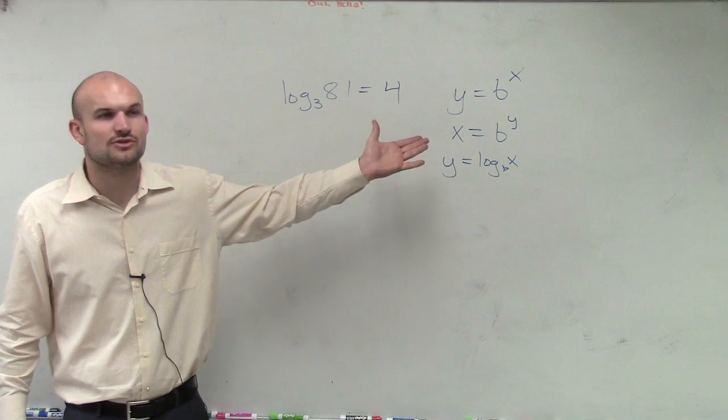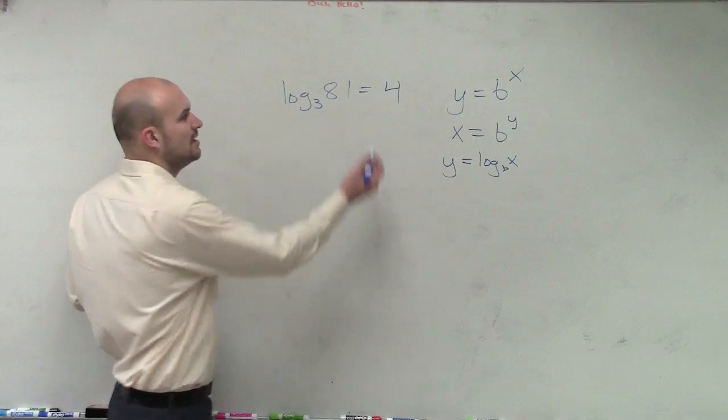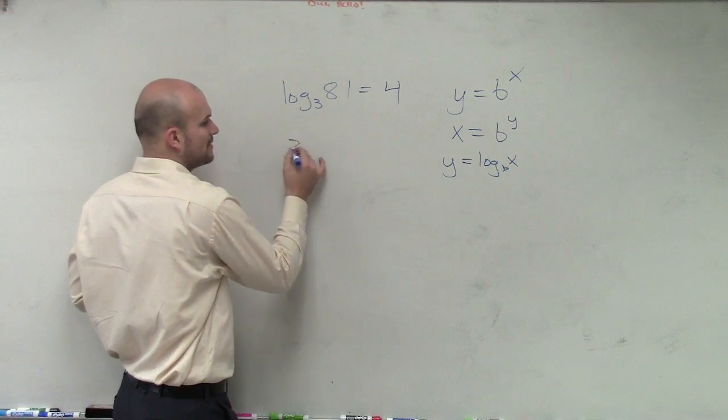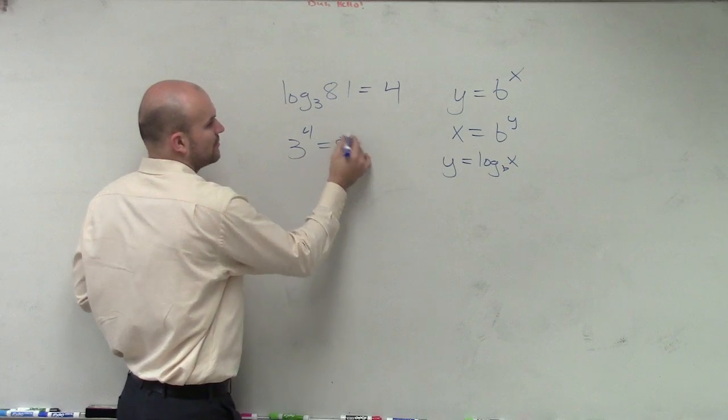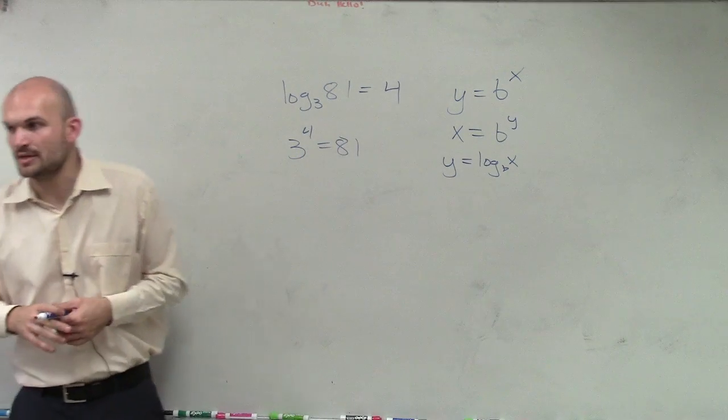Now let's transfer this to exponential form and see if it makes sense. If I was to write this in exponential form, it'd be 3 to the 4th power equals 81. Is that still a true statement? Yes.